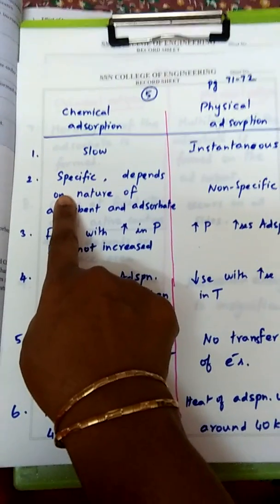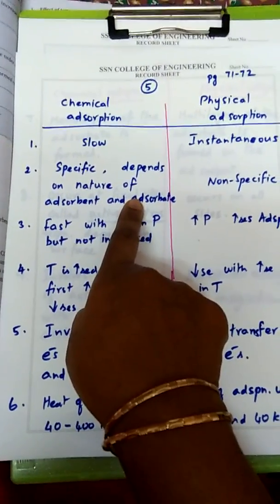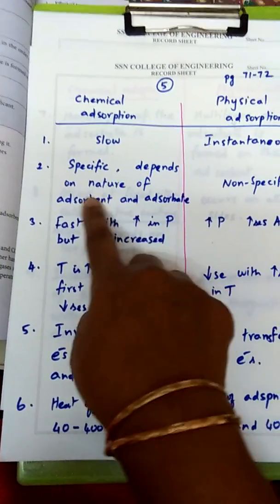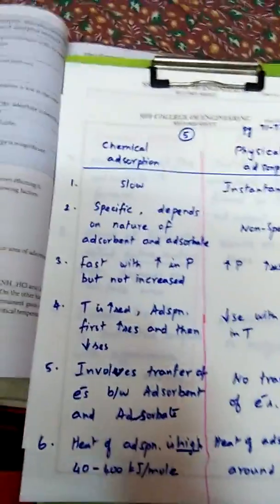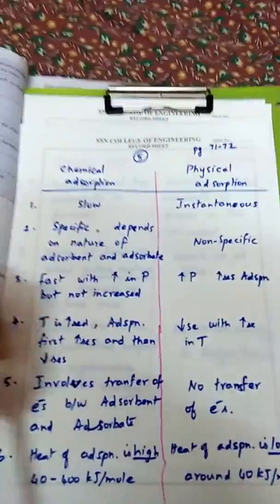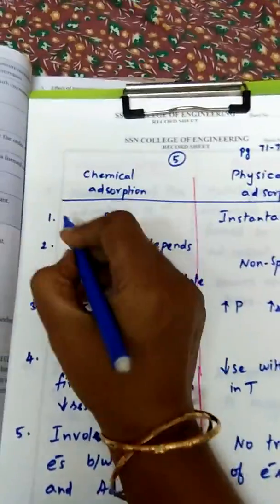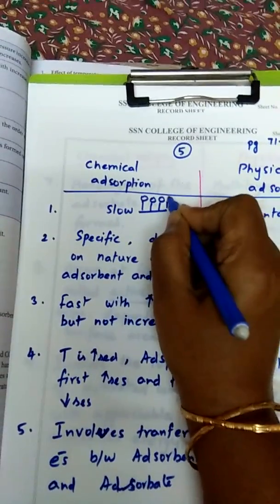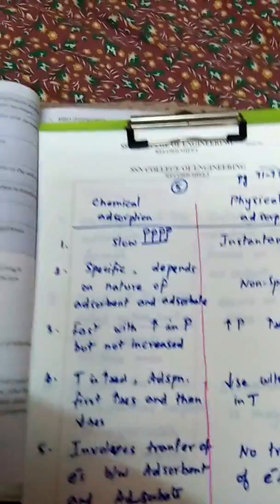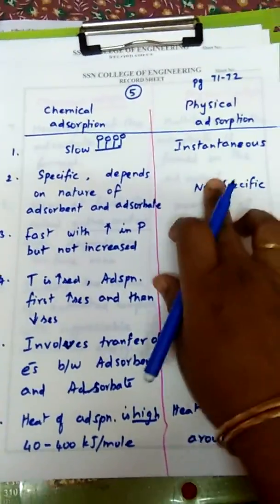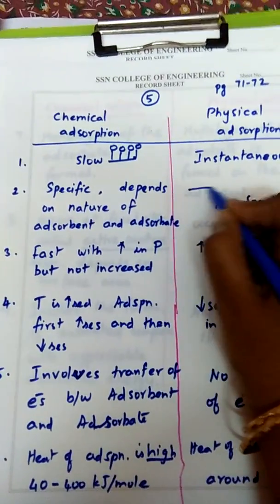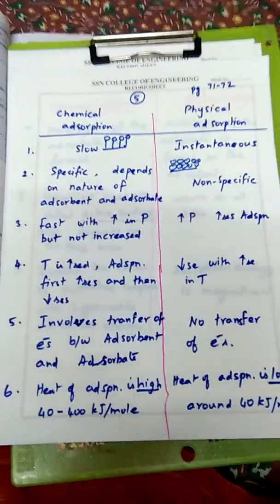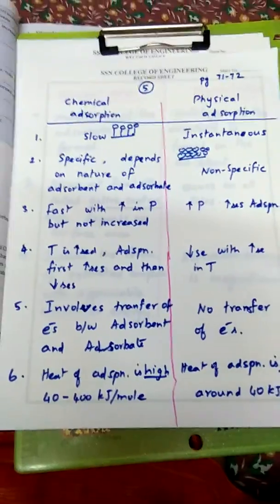Chemical adsorption is specific — it depends on the nature of the adsorbent and adsorbate. An adsorbent is the surface where adsorbate molecules are adsorbed through chemical bonds, and this is called chemical adsorption. Physical adsorption is non-specific. Here the adsorbent also adsorbs the adsorbate, but it forms several layers and Van der Waals forces of attraction exist between adsorbent and adsorbate — no chemical bond is formed.